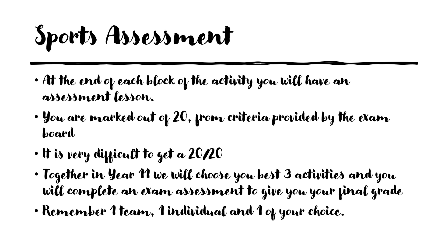When we assess the sports, we do that at the end of each block — after about five or six lessons, we'll have an assessment lesson. We have to give you a mark out of 20, from criteria produced by the exam board that we follow closely. It's really difficult to get 20 out of 20. We've had national swimmers and a rower nearly at international level score 20 out of 20, so you certainly have to be at that national level. It's not impossible, but it is difficult.